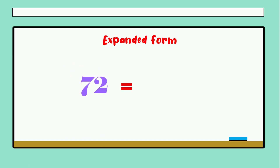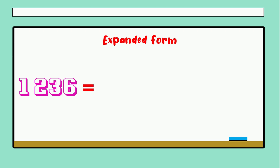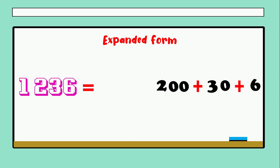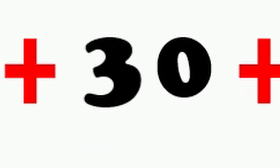72 equals two plus — seven tens, one zero, so 70. The next example: 1,236 equals 6 plus — three tens, one zero — plus two hundreds, two zeros — plus one thousand, three zeros. The pattern: units have no zeros, tens have one zero, hundreds have two zeros, thousands have three zeros. Continue this pattern for greater numbers.